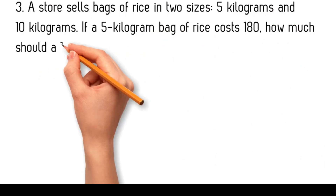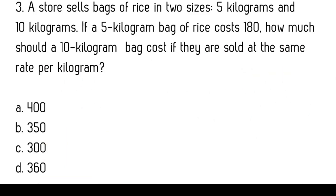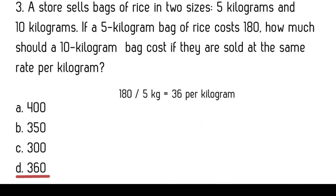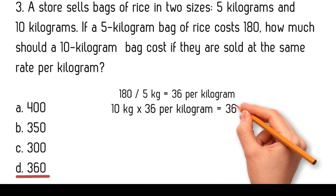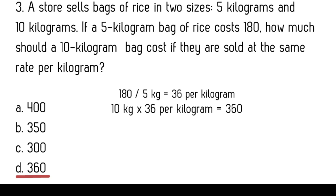A store sells bags of rice in 2 sizes: 5kg and 10kg. If a 5kg bag of rice costs 180 pesos, how much should a 10kg bag cost if they are sold at the same rate per kilogram? The cost per kilogram is 180 pesos divided by 5kg equals 36 pesos per kilogram. The cost of a 10kg bag is 10kg times 36 pesos per kilogram equals 360 pesos.